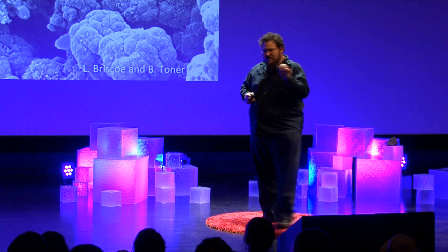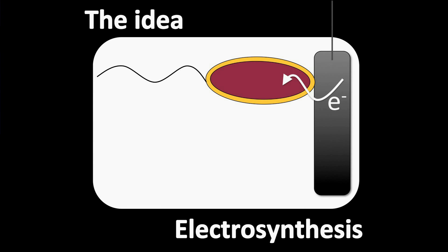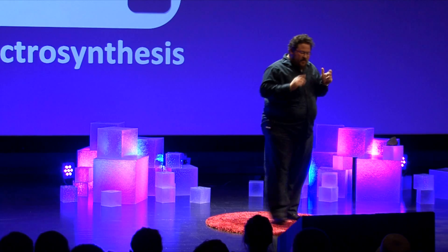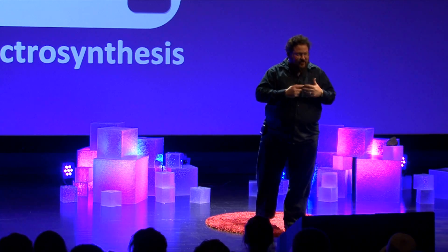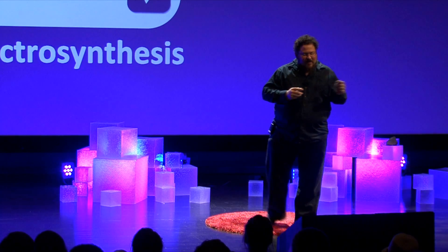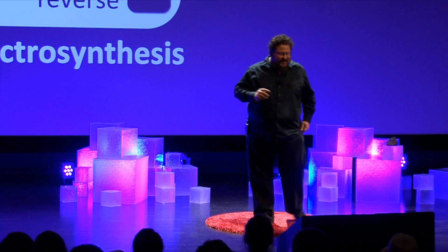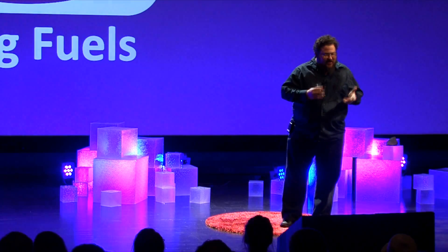So what's the idea? Why did I tell you about microbes making electricity and microbes making rocks? We have an idea we call electrosynthesis. Instead of microbes making electricity, we want microbes to use electricity. By studying the bacteria from the mine that are making rocks, we think we can understand how to engineer microbes to take electricity in — reversing what the electricity-making bacteria do. We want to use electricity to generate ATP, generate reducing power, and teach bacteria to fix CO2 just like plants do, so they can be used to make fuels.